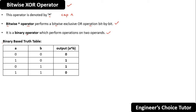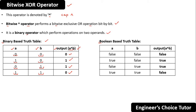First we will see the binary-based truth table, then the boolean-based one. Here 'a' is the first operand and 'b' is the second operand, so we have two operands and the output is a XOR b. If a is 0 and b is 0, output is 0. If a is 1 and b is 0, output is 1. If a is 0 and b is 1, output is 1. If both a and b are 1, output is 0.